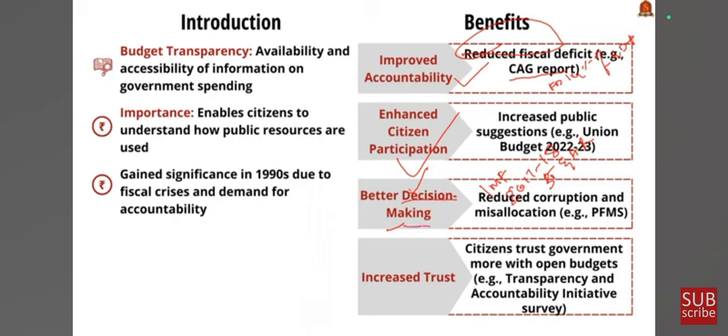Thirdly, budget transparency helps in better decision-making. Transparency facilitates data-driven decision-making, reducing the risk of corruption and misallocation of resources. The Government of India's public finance management system has improved fund tracking and reduced leakages by 10–15%. Finally, it helps in increasing trust between citizens and the government. A survey by the Transparency and Accountability Initiative found that 70% of Indians trust the government more when budget information is readily available.